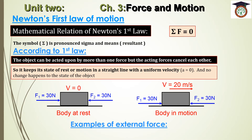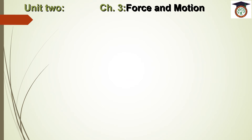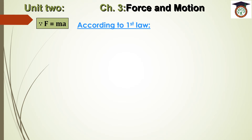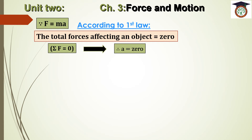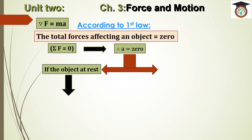We have many examples of external forces that may cause a change in object velocity, such as air resistance and friction force. The conclusion is that force equals mass times acceleration: F = ma. According to Newton's First Law, when ΣF = 0, the acceleration equals zero and no change occurs to the object's state. The acceleration equals zero in two cases: if the object is at rest, we can represent this graphically with a distance-time graph as a straight line parallel to the time axis.